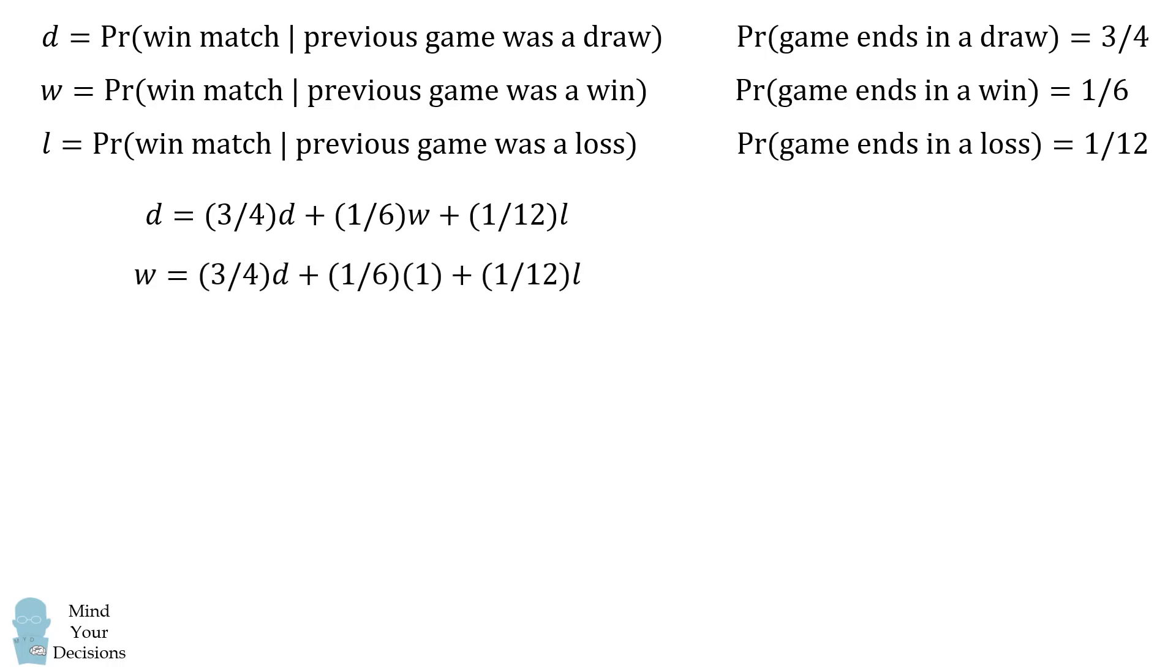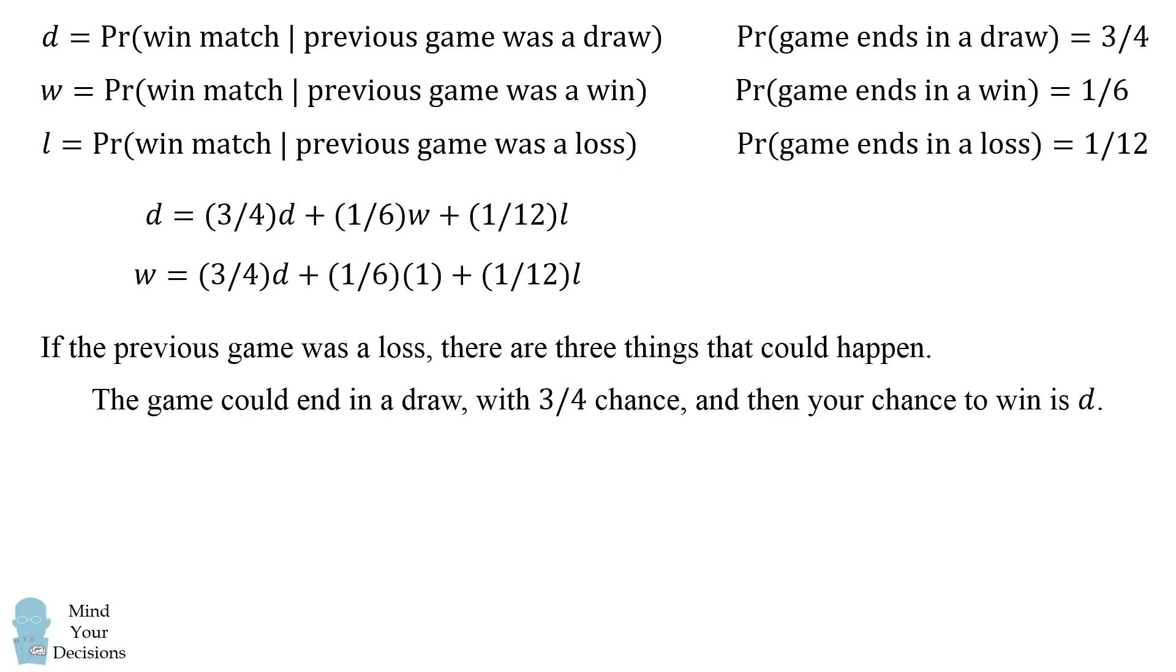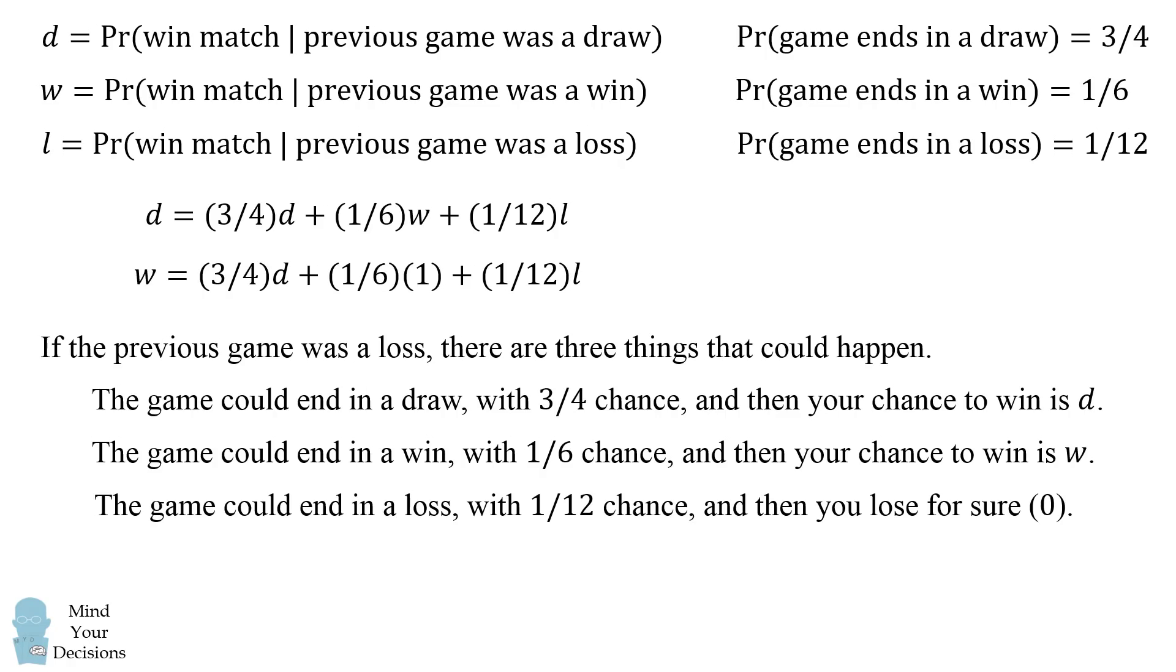So we now can figure out one more equation for L. This will be found if the previous game was a loss. Again, there are three things that could happen. The game could end in a draw with 3 fourths chance and then your chance to win is D. The game could end in a win with a 1 sixth chance and then your chance to win is W. Finally the game could end in a loss with a 1 twelfth chance. In this case you will lose for sure because you've lost the previous game and you've lost the current game. So you've lost two games in a row, which means the other player has won two games in a row. So your chance to win this will be zero. So the equation for L is that L is equal to 3 fourths times D plus 1 sixth times W plus 1 twelfth times 0.